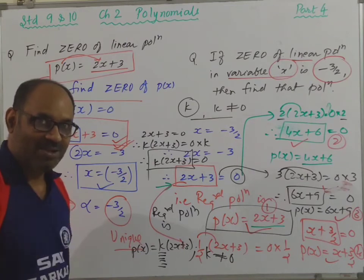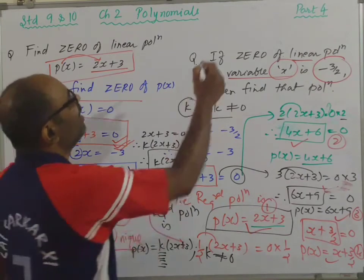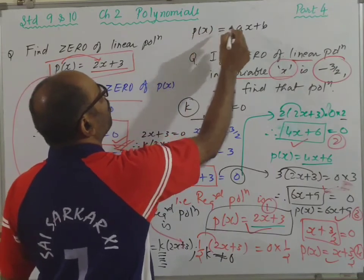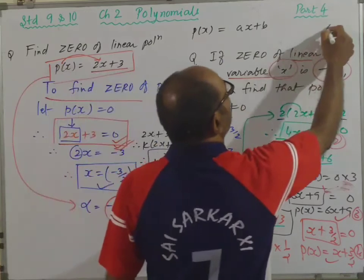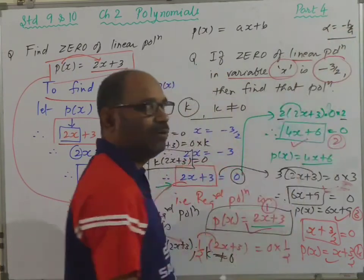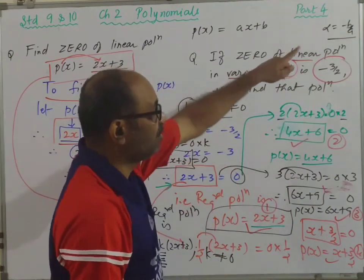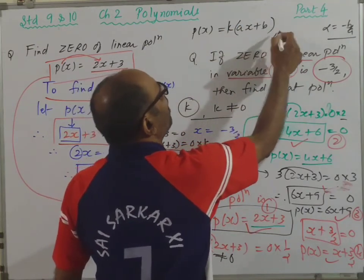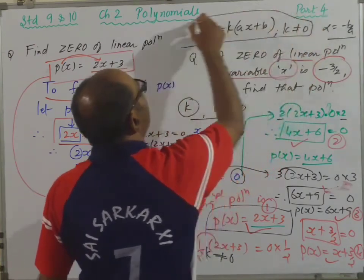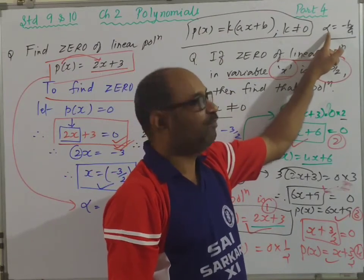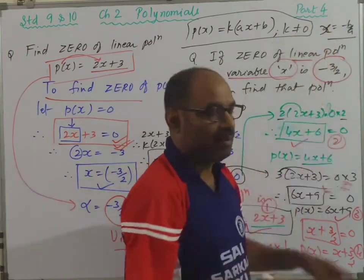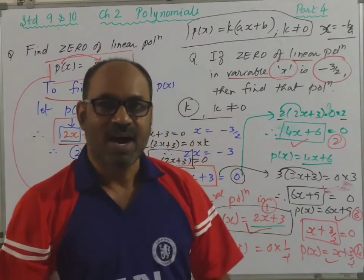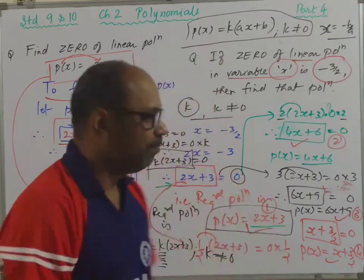Don't simply write 2x + 3 — you need to write k in front of it. I hope you understood why we write k. The standard form of a linear polynomial is p(x) = ax + b. The zero of a linear polynomial is alpha = -b/a. So the polynomial whose zero is -b/a is given by p(x) = k(ax + b), where k is not equal to zero. Any linear polynomial with zero alpha or x = -b/a is given by k(ax + b).